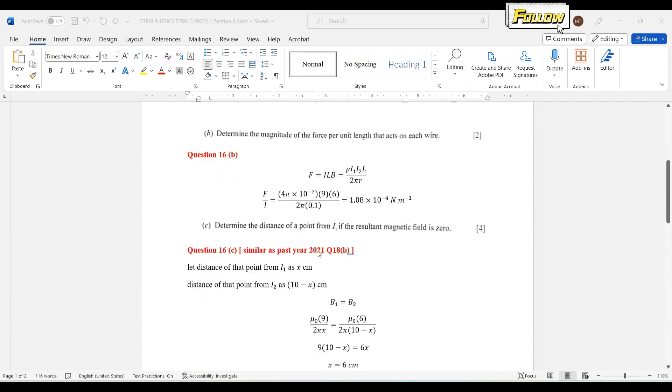We move on to the last question. This question is actually similar to a past year question in 2021. You can watch back that question to see the solution with a more complete explanation. The question asks for the distance of a point from i1 where the resultant magnetic field is 0.